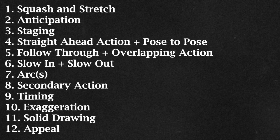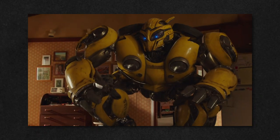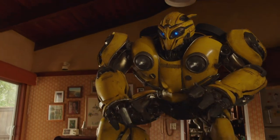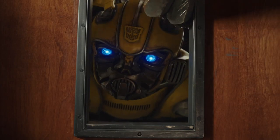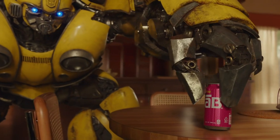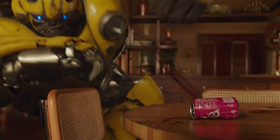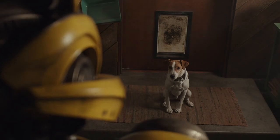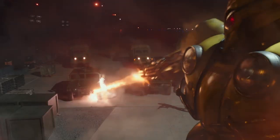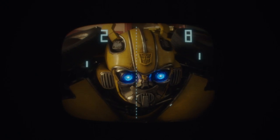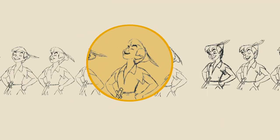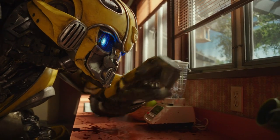In this video, I'm going to look at the 12 principles of animation by examining a specific scene in Bumblebee: the scene where Bumblebee is left home alone. Charlie's off to work, and instead of just staying put in the garage, Bumblebee walks around the house exploring different human objects, causing a lot of destruction in the process. The scene can be understood on its own, so I'll be using examples from it alongside traditionally animated examples. So without further ado, let Bumblebee teach you about the 12 principles of animation.